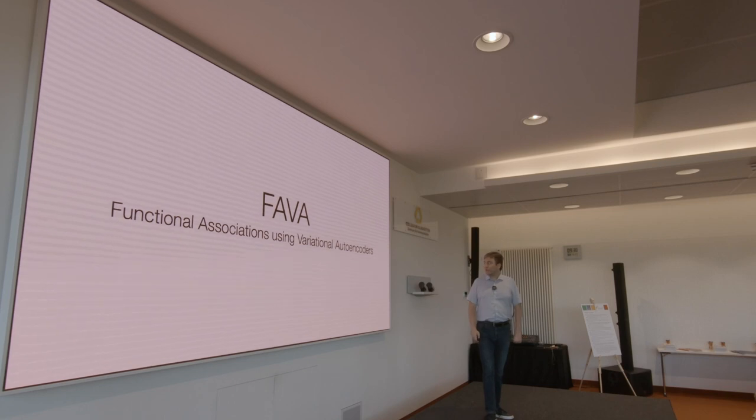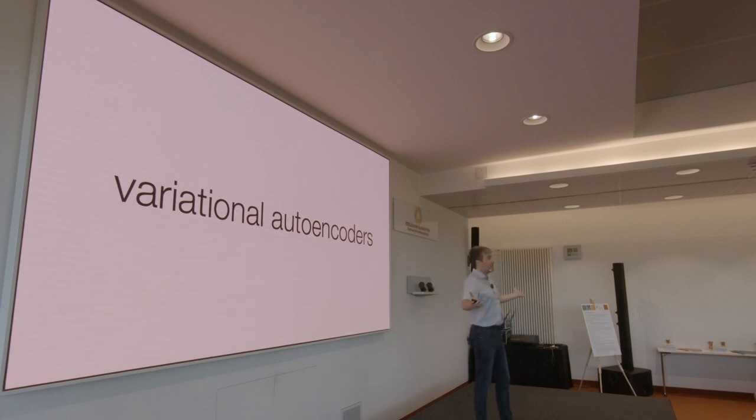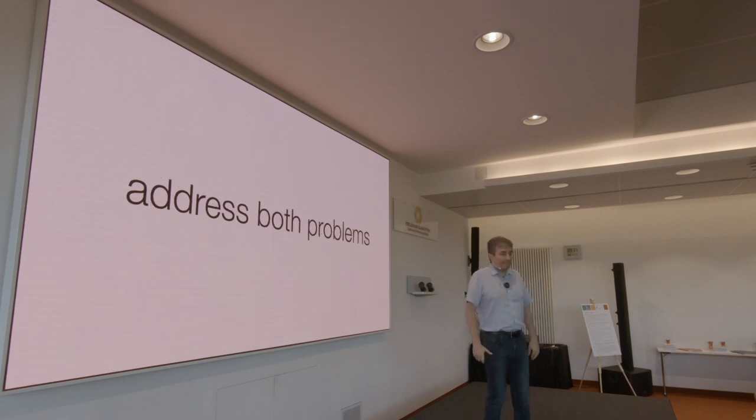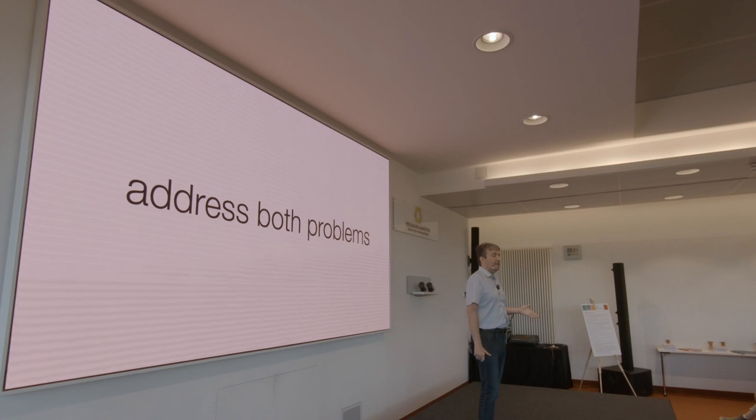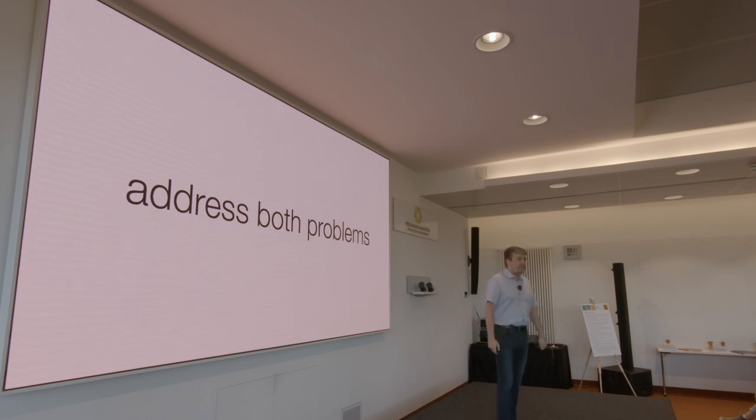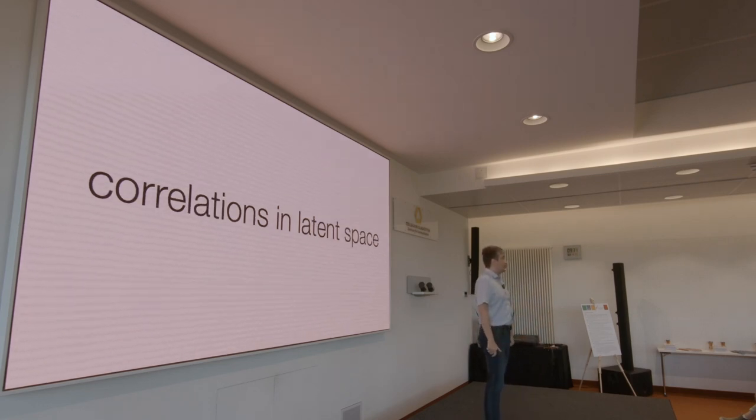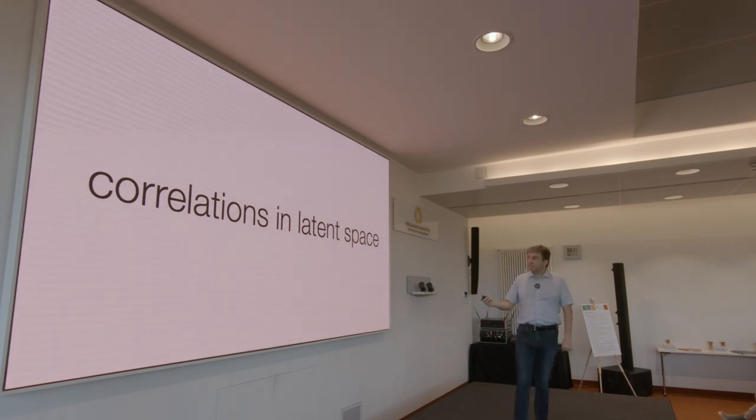And that's something we've recently been addressing through a method called FAVA. It's functional associations using variational autoencoders. And the trick is very simple. As the name implies, we take variational autoencoders and we apply them to these very high dimensional data to learn from the hundreds of thousands of dimensions, a low dimensional latent space, as it's called. And that is effectively data compression. And by doing data compression, you're able to address both problems. Because when you're compressing data, how do you manage to compress the data without losing a lot of information? And the answer is by eliminating redundancy. The other thing is that by compressing it together in fewer dimensions and kind of averaging over similar cells effectively, you also get rid of the missing values. So this suddenly gives you a much better starting point.